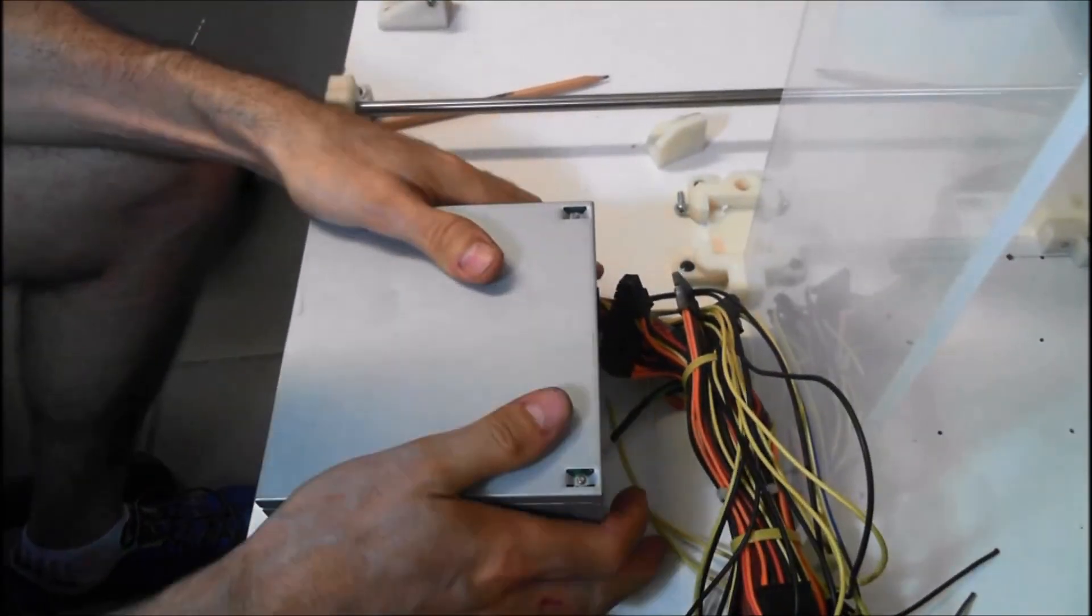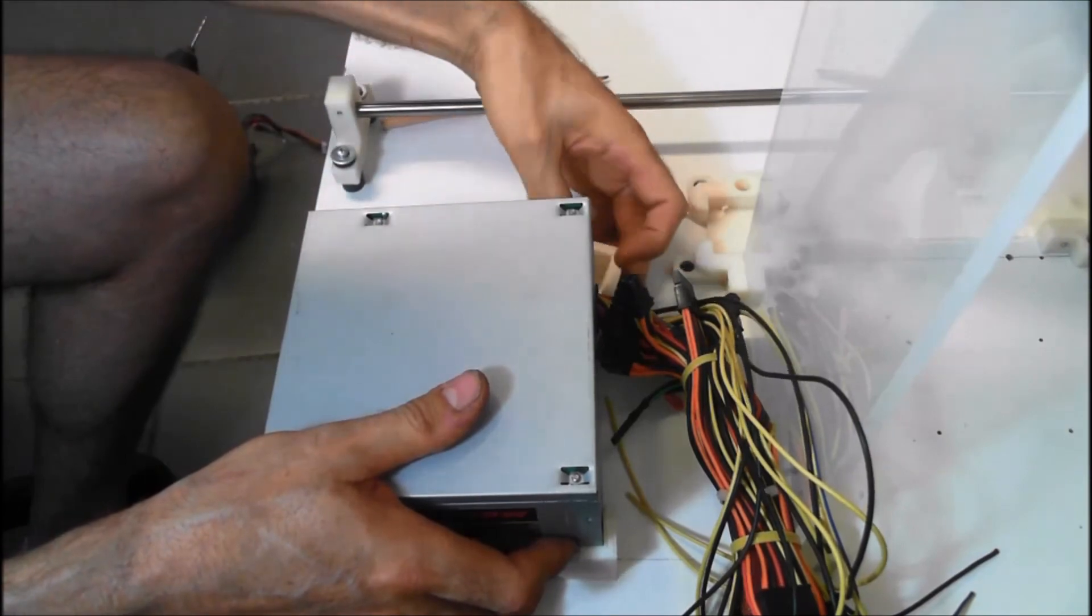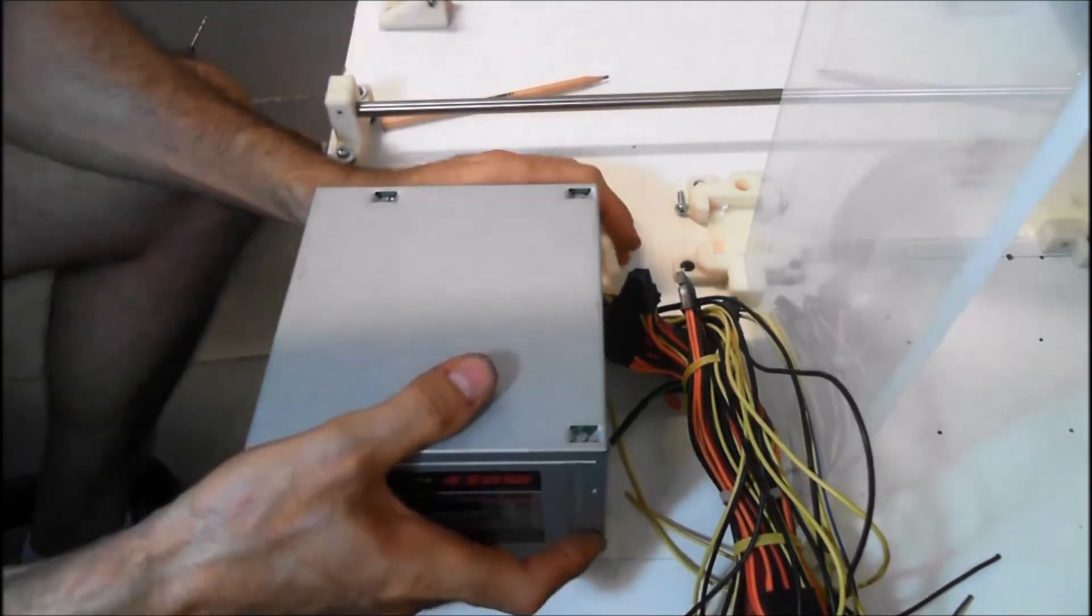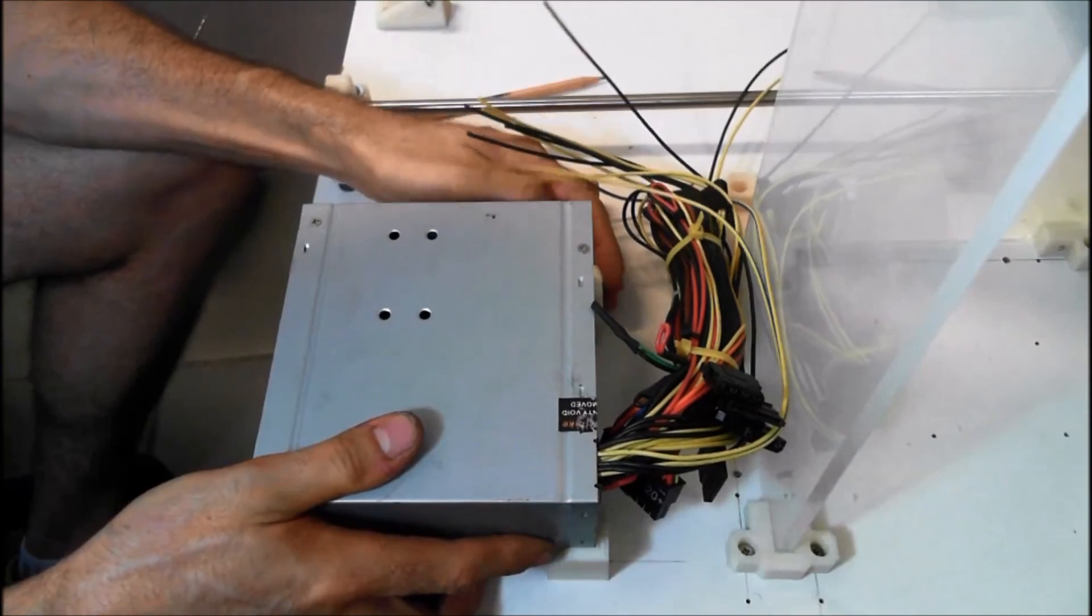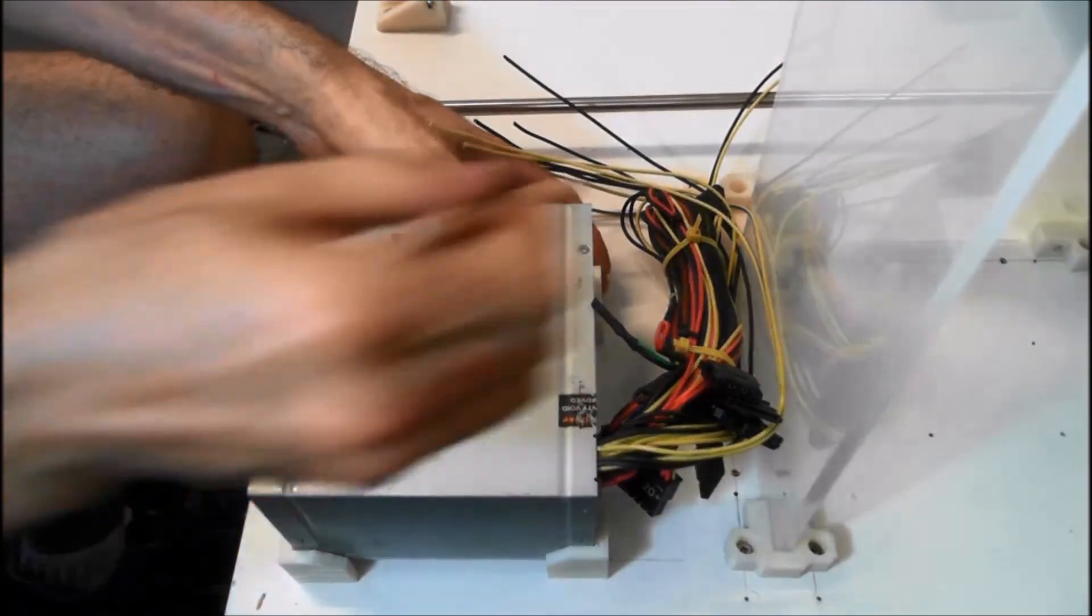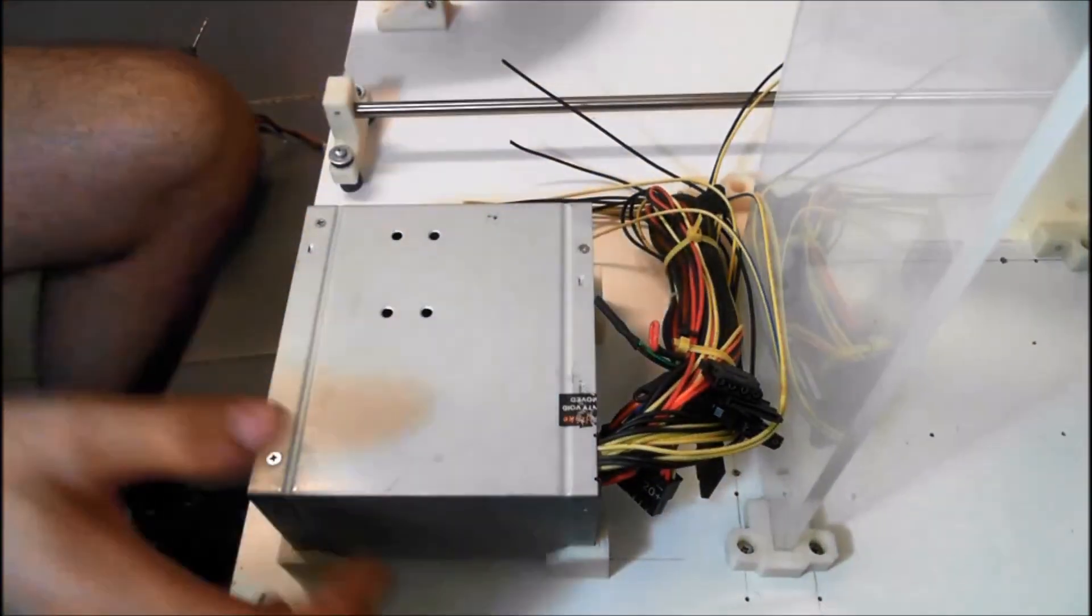Do it again for the last corner. Flip it and we'll just draw a line on both edges of that corner and we'll just line it up.